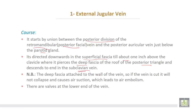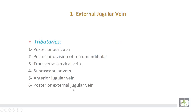The deep fascia is attached to the wall of the vein all around during piercing. So if the vein is cut, it will not collapse and causes air suction, which leads to air embolism. There are valves at the lower end of the vein. The tributaries of the external jugular vein are: number one, posterior auricular; number two, posterior division of the retromandibular vein.